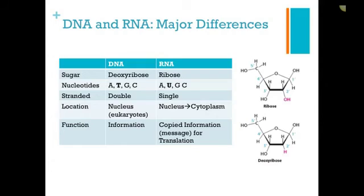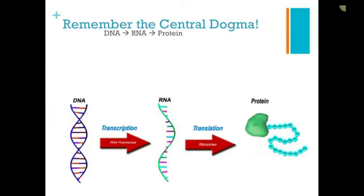So that brings us to a reminder about the central dogma. We start with double-stranded DNA, and then we make a copy of that in RNA. That's a single-stranded form of the message. And then outside of the nucleus, we translate that into protein, that three-dimensional structure.